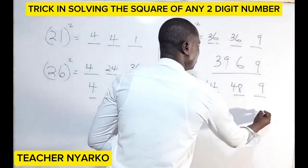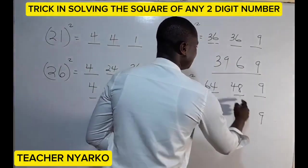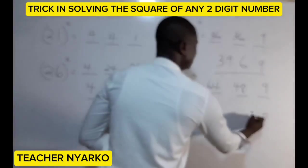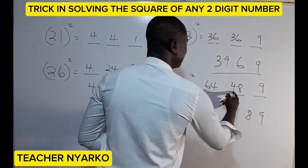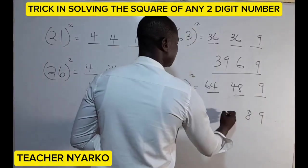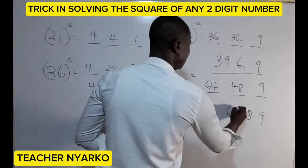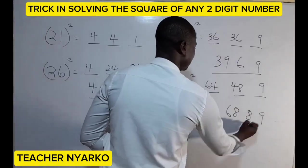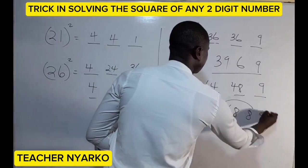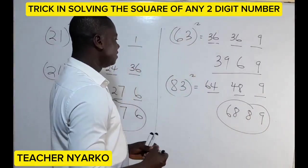We have single digits and double digits, so we reduce. We keep nine here, bring down the eight, and add the four to the next column — giving us 68. So 6889 is the answer for 83 squared.